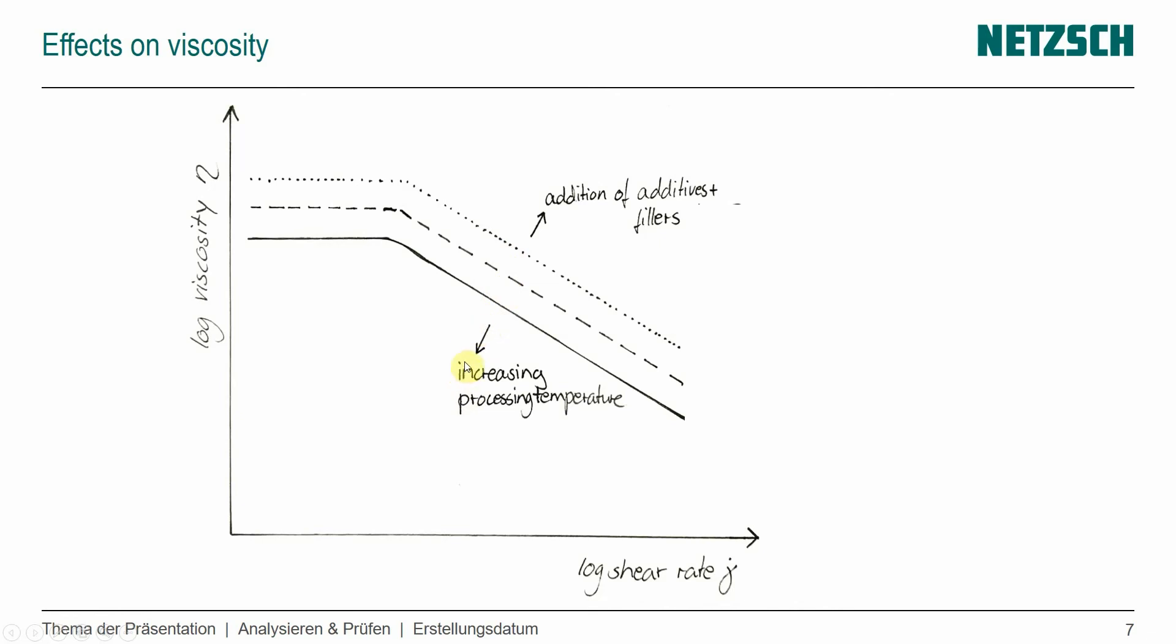And as we add additives and fillers in particular, which we see a lot in material extrusion, the viscosity is actually increased. So that's something else we need to understand as we're modifying the materials, obviously the printing temperature and what effect it has, but also the addition of fillers. And I'm going to talk about that in the next episode.